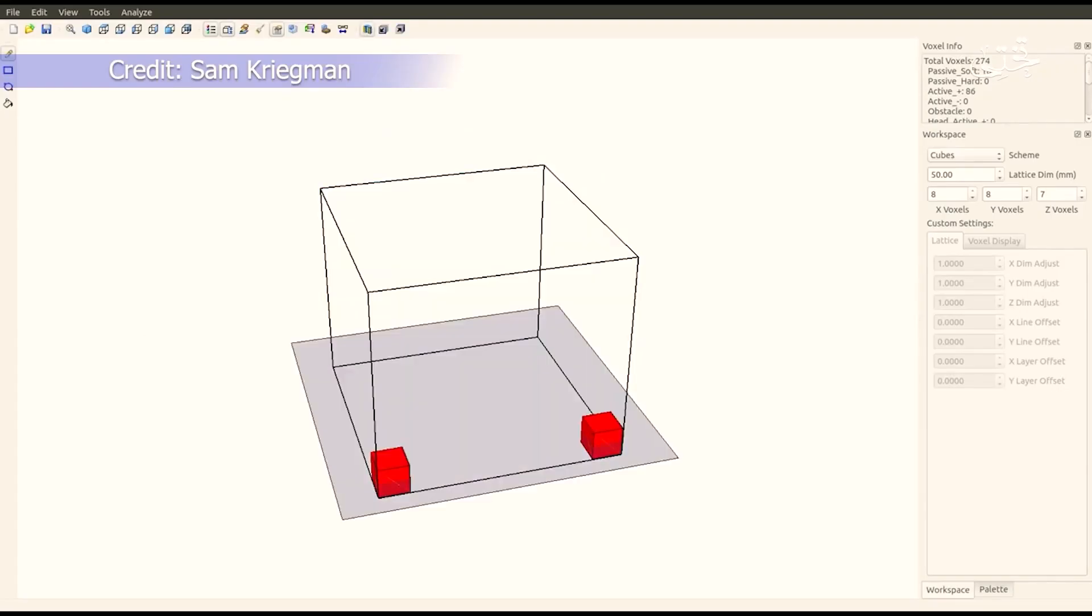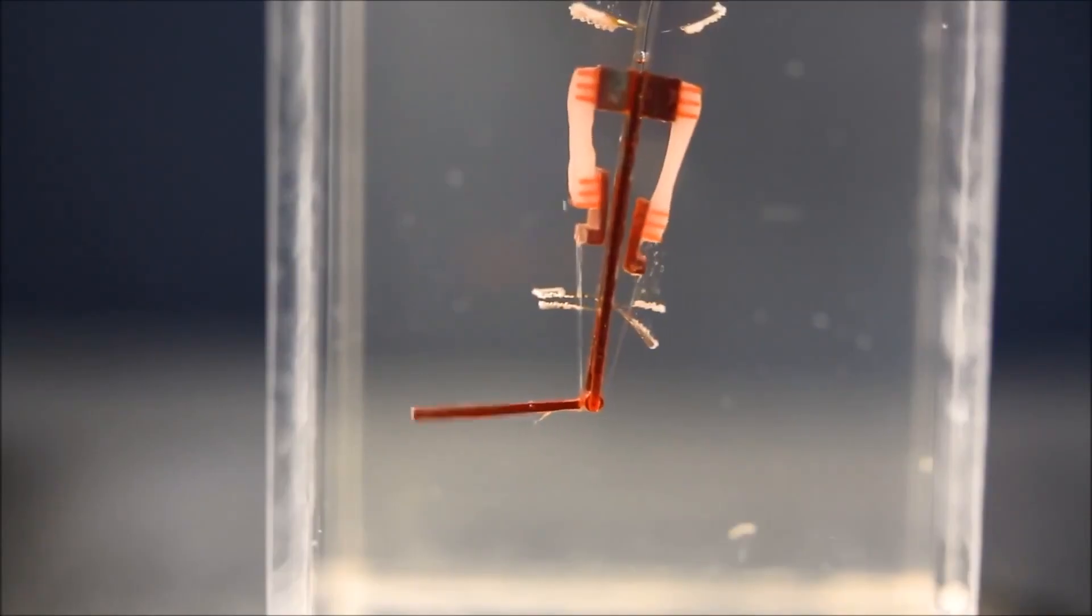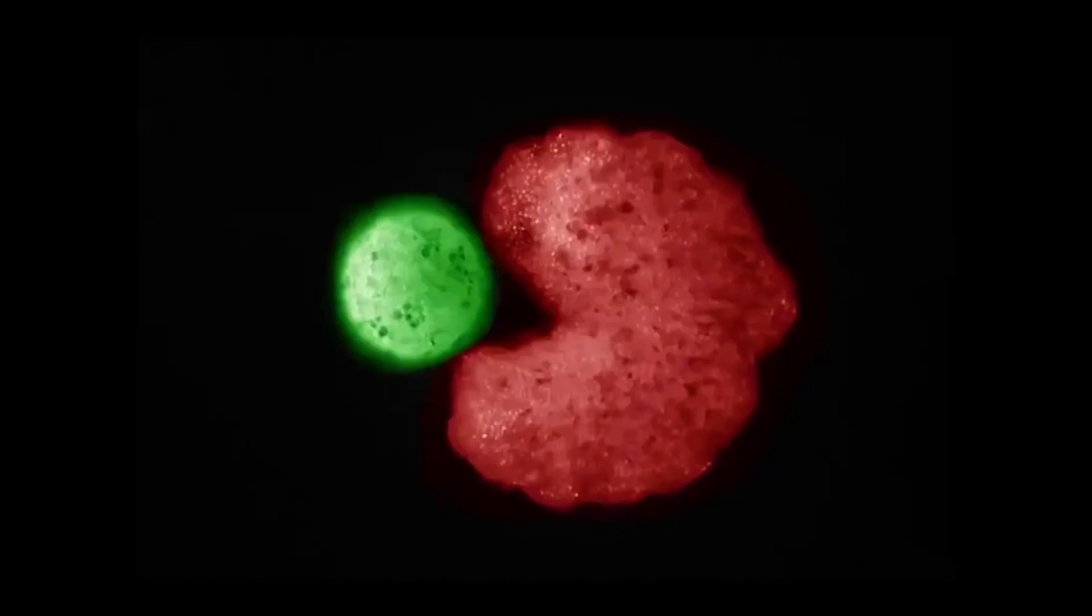While the formation of the bots is done by human hands, their designs have very little human input as they're largely done by a complex artificial intelligence program called the VoxCAD. This program creates a virtual environment that's complete with real-life simulations and small cubes called voxels, which essentially become the cell for each digital xenobot.